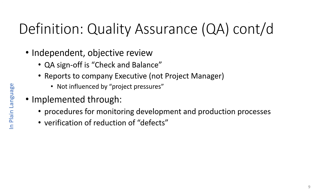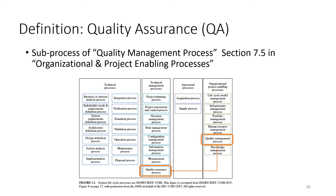It is very important that quality assurance is this independent objective review. Quality assurance is implemented through procedures for monitoring the development and production processes, and then verifying and reducing the defects that result from these processes. The quality assurance process is defined in the technical management processes as a sub-process of the quality management process, which is part of the organizational project enabling processes.